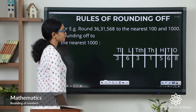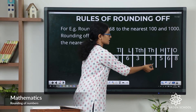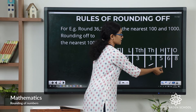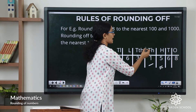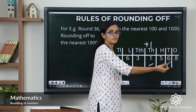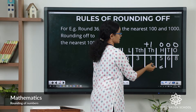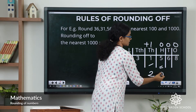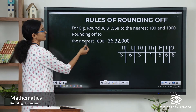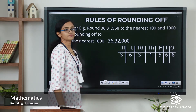Now let's round it off to the nearest thousand. The rounding digit is the thousands digit, which is 1. The digit to the right of it is the hundreds digit, which is 5. Since it is 5 or more than 5, we add 1 to the rounding digit and change all the digits to the right of it to zeros. So 1 plus 1 equals 2, and the remaining digits become zeros. This number rounded off to the nearest thousand is thirty-six lakh thirty-two thousand.